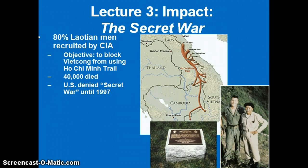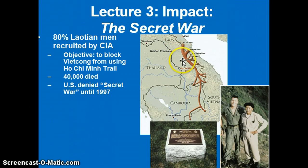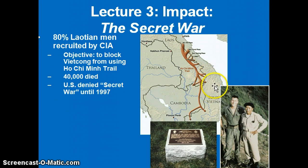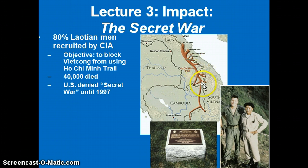Finally, immigration patterns to America were affected, starting with the Secret War — a war that was actually labeled as such in 1997, as the United States denied it took place until that time. The objective was to recruit mostly Hmong from the country of Laos to infiltrate the Ho Chi Minh Trail, which was used by North Vietnam to supply the Viet Cong fighters — the guerrilla fighters — throughout the South to attack South Vietnamese strongholds as well as American troops. The Viet Cong became the number one enemy of America in South Vietnam and a major reason why the Americans did not meet their objectives in this war.